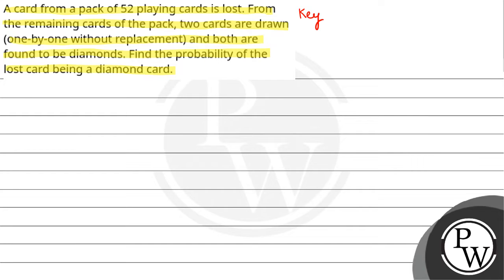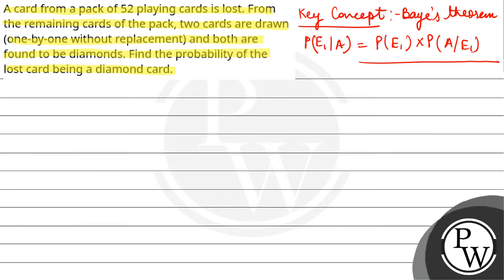The key concept is Bayes' theorem for two events. In this case, probability of E1 given A would be equal to probability of E1 into probability of A given E1, upon probability of E1, probability of A given E1 plus probability of E2, probability of A given E2.